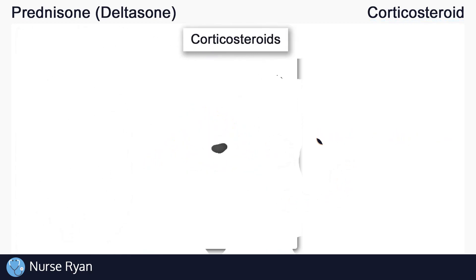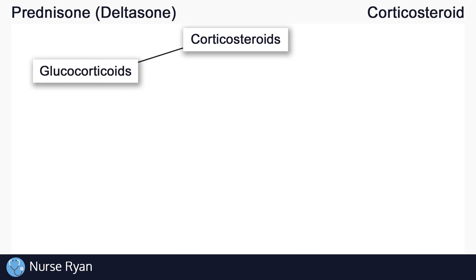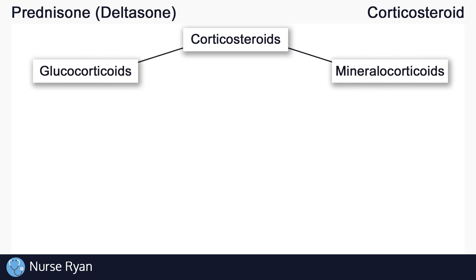There are two main classes of corticosteroids produced by the adrenal cortex: the glucocorticoids and the mineralocorticoids, which each have their own effects in the body.